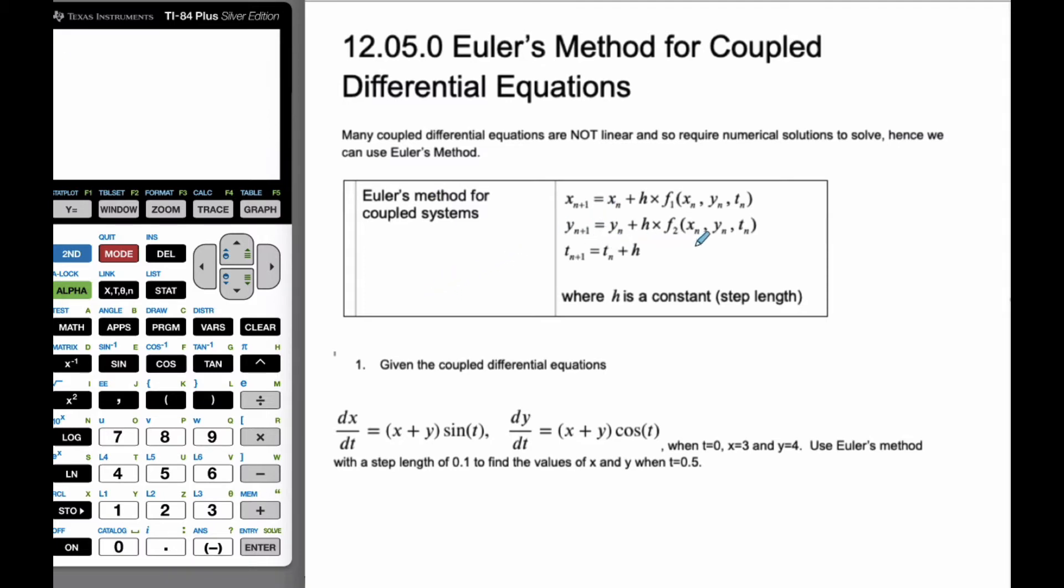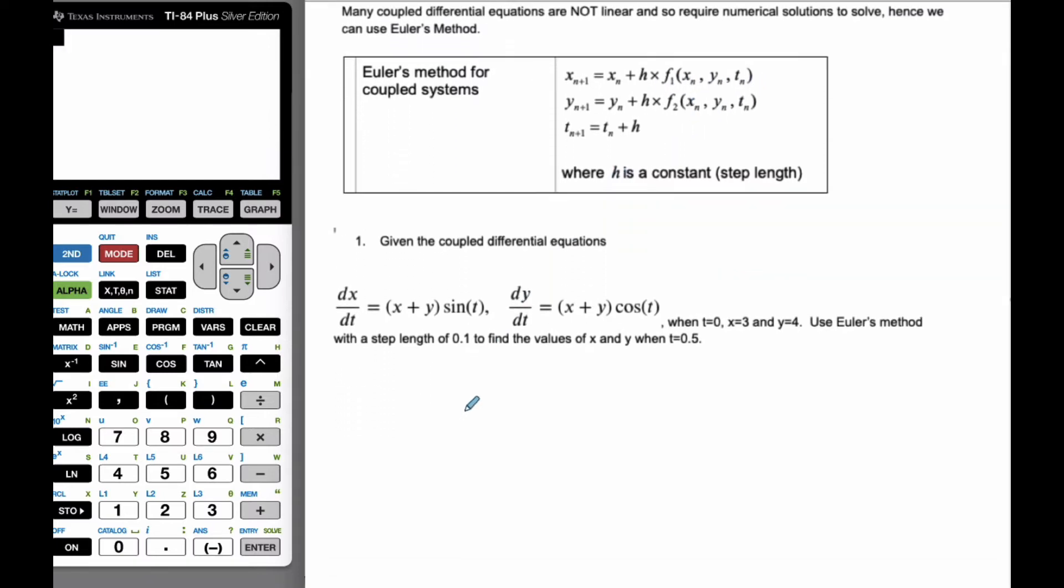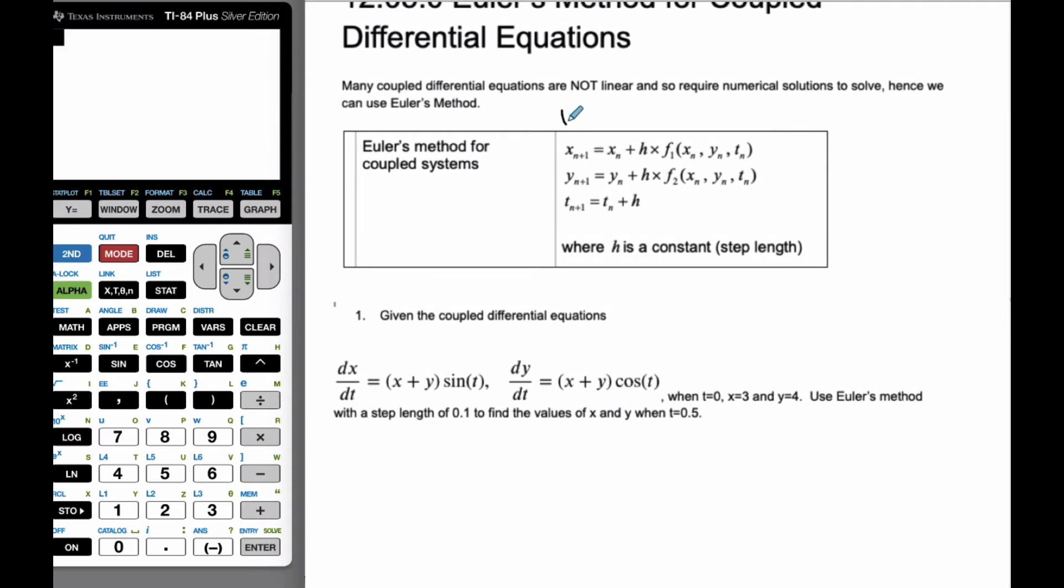Here we have an extra variable to consider, because we have x and y, and then time is also considered the third variable. It's very similar to the initial one. I like to think about it as xn equals xn minus 1 plus h, and then f1 times xn minus 1, yn minus 1, and then tn minus 1. It seems to fit better into my tables.